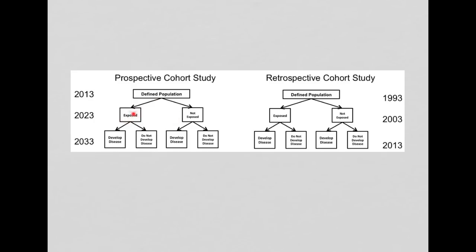We follow them for 10 years, this cohort, and then we look at whether they were exposed to our exposure of interest 10 years later. And then 10 years after that, we look at whether they developed the disease or not. So in both cases, we have a cohort that we follow for 20 years.